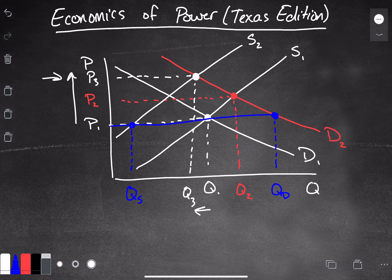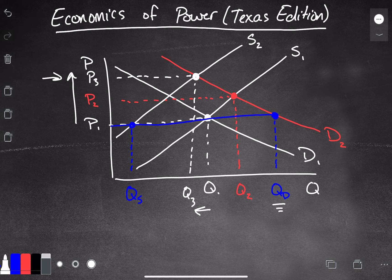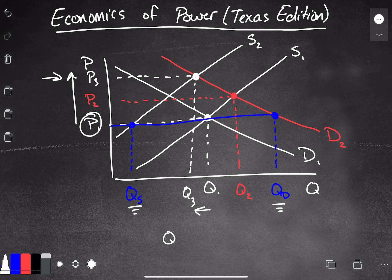So here we've got the quantity demanded, which is the amount of electricity that people actually want to consume at this price here, is far greater than the quantity supplied. So the quantity demanded is greater than the quantity supplied. So what do you do in that type of situation?